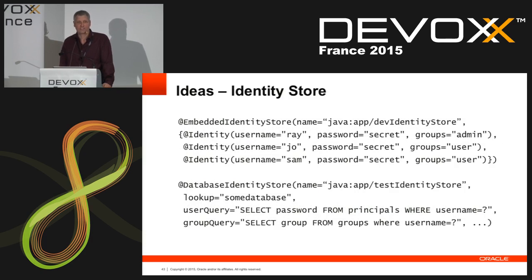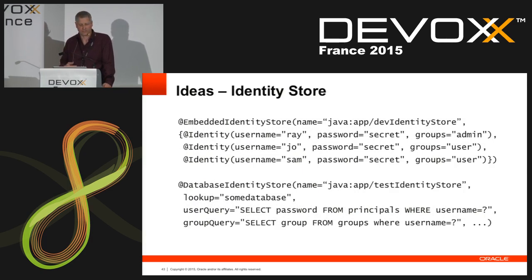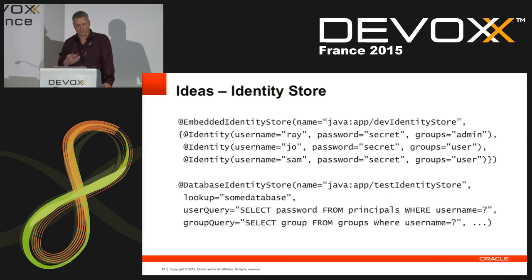Other options include an embedded identity store, where if you're developing and just want to quickly get some users and groups into your app for development purposes, you could define identities inline. There's also the database identity store, where you would supply queries that let you determine the attributes for the identity and also provide database connection details.